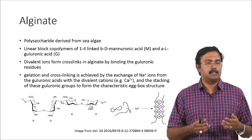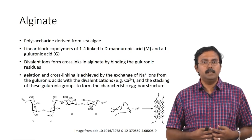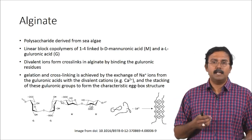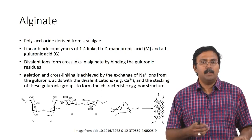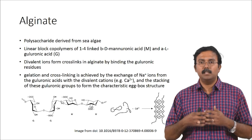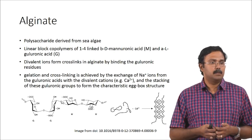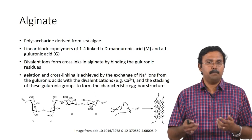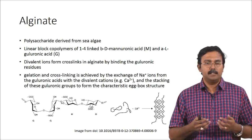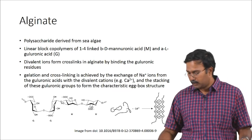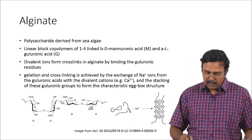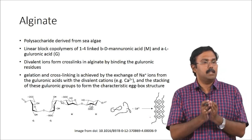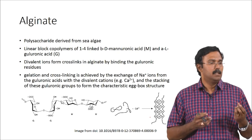Alginate is basically a polysaccharide derived from sea algae. It is a linear block copolymer of 1,4-linked beta-D-manuronic acid and alpha-L-guluronic acid. The divalent ions can actually form cross-links in alginates by binding to the guluronic residues. During gelation and cross-linking, the sodium ions get replaced with calcium ions, resulting in the formation of something like an egg-box structure. These chains which are separate then get cross-linked because of the presence of the calcium ions, forming a strong gel.